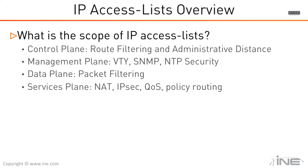For the data plane, ACLs are clearly used for packet filtering — that's what we'll primarily focus on moving forward. We'll also touch on other planes as we get into securing the management and control planes. The services plane uses ACLs to match on traffic you want to NAT, or for IPsec services like your proxy ACL with crypto map configuration, and for QoS marking or policy routing based on Layer 3 and/or Layer 4 headers.